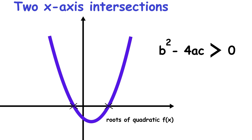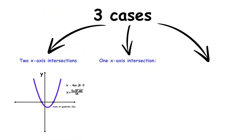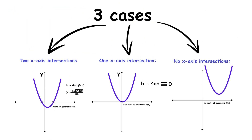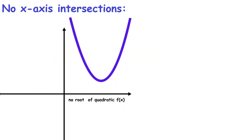The discriminant is the value inside the square root in the quadratic formula: x equals negative b plus or minus the square root of the quantity b squared minus 4ac, all over 2a. One x-axis intersection means the function has one real-valued zero with multiplicity two, and the discriminant equals zero. No x-axis intersections means the function has no real-valued zeros — its zeros exist only in the complex numbers — and the discriminant is negative.